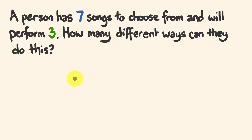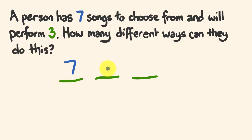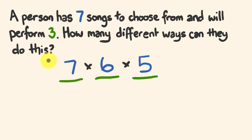The way I'd approach this question is to put three different spaces for the three songs that are going to be sung. For the first song, how many choices does this person have? They have seven songs to choose from. For the second song, they've already sung one, so now they've only got six to choose from. And for the third, five. We multiply these through to get the number of different permutations: seven times six times five is 210 different ways of selecting these songs.